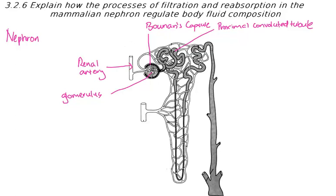It is called proximal because of its proximity — its closeness — to the Bowman's capsule, and convoluted because it twists and turns.